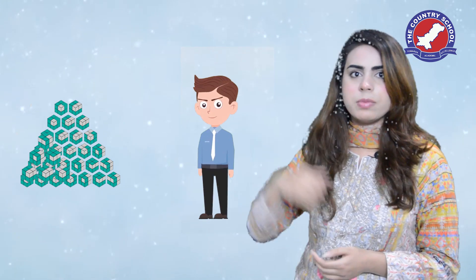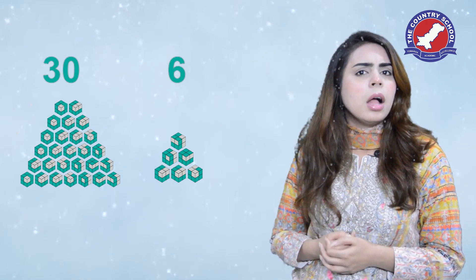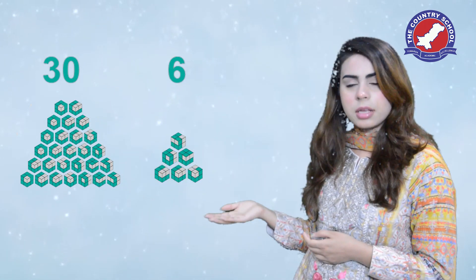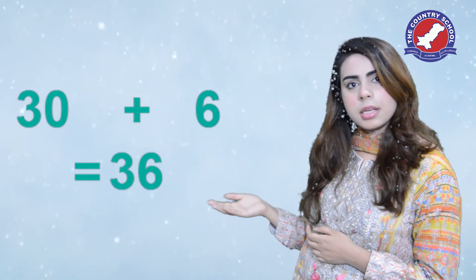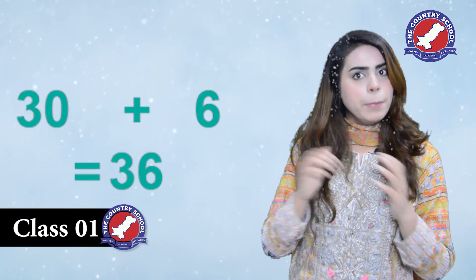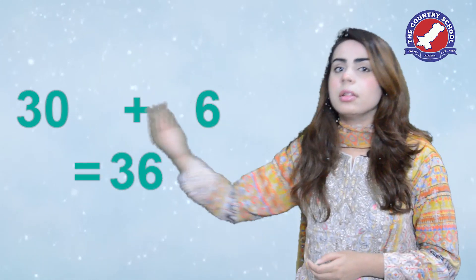For example, there are two kids. Humare paas doh bache hain — Wrinkle and Bubbles. Wrinkle ke paas 30 cubes hain and Bubbles ke paas 6 cubes hain. Did you see — 30 and 6. 30 cubes and 6 cubes. Can you tell me mein 30 aur 6 kitna hota hai? 30 plus 6 is equal to 36. Jab hum Wrinkle aur Bubbles dono ke cubes mila dete hain, toh woh kitne cubes bante hain? 30 and 6 meaning 36 — 36, right!